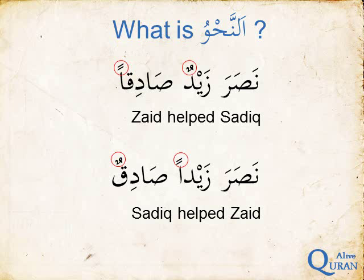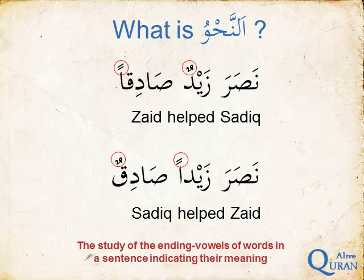So that's just an example of what Nahu is. In terms of a definition, Nahu would be the study of the ending vowel — in other words, what is the vowel on the last letter, or the combination at the end of a word, in this case the -un and the -an. The study of these end vowels indicates the meaning or the role of a word in a sentence. This has been a brief introduction to what is Nahu.